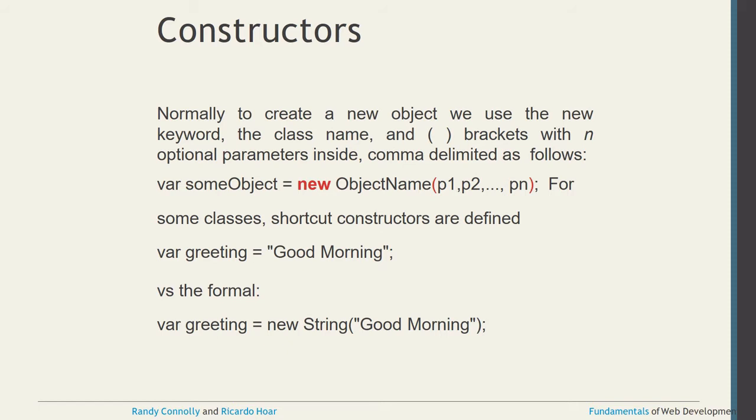Normally when creating a new object you use the 'new' keyword, as in all programming languages. You write 'var someObject = new ObjectName()' with optional parameters. In JavaScript there is also a shortcut way. For example, 'var greeting = "good morning"' is shorthand, while the formal way is 'var greeting = new String("good morning")' — a string object with a semicolon to terminate the statement.